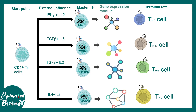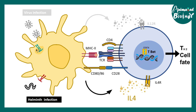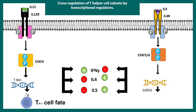Each master transcriptional regulator activates a distinct transcriptional module that upregulates subtype-specific genes and leads to terminal fate. For example, viral infection triggers IL-12 secretion, which upregulates TBET and drives TH1 differentiation. Helminth infection triggers IL-4-mediated responses, forming the TH2 subpopulation. These cytokines can also mutually suppress each other — IL-4 stops production of IL-12 and vice versa.